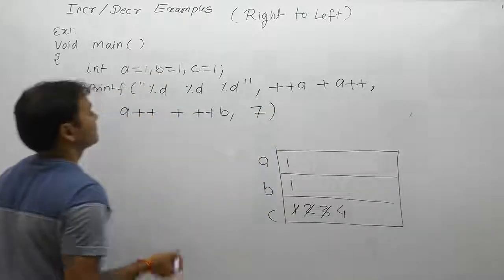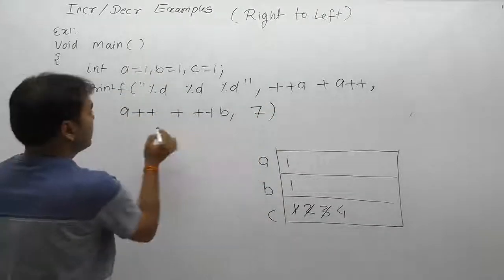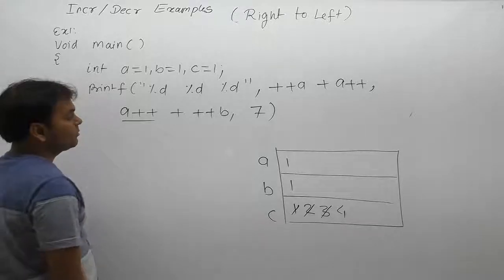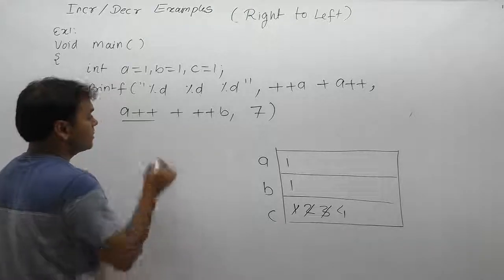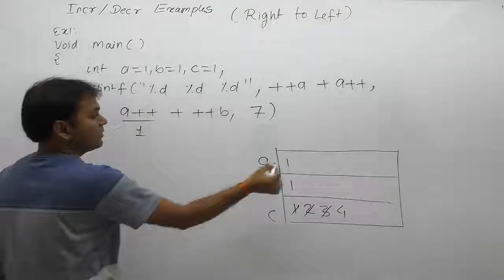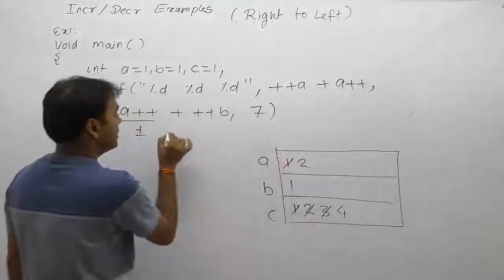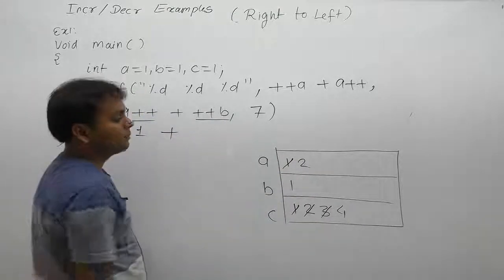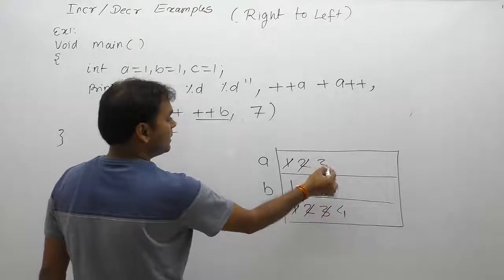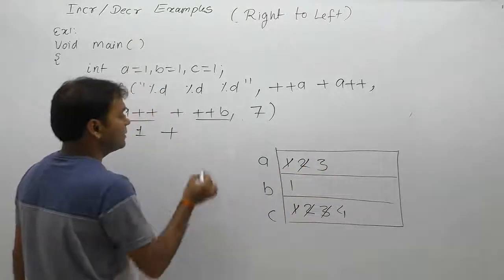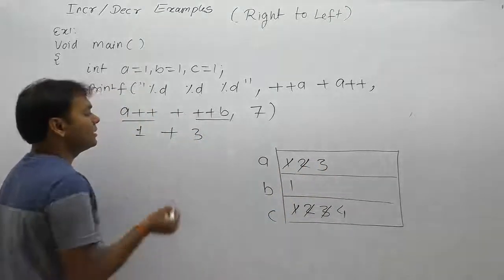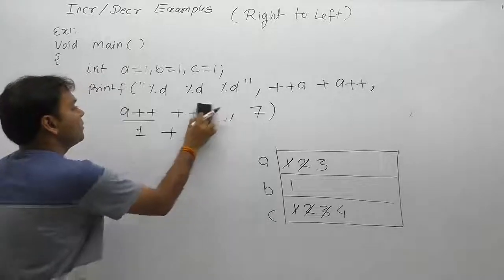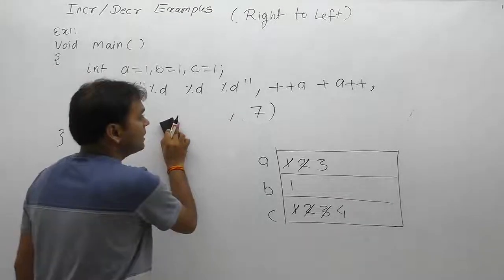In the next expression, a++ is post — so first replace, then increment. The next operator is pre — so first increment, then replace. The final result is 1 plus 3 equals 4, so the overall expression is replaced by 4.